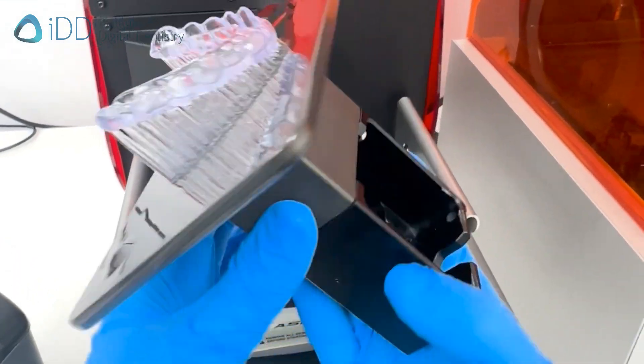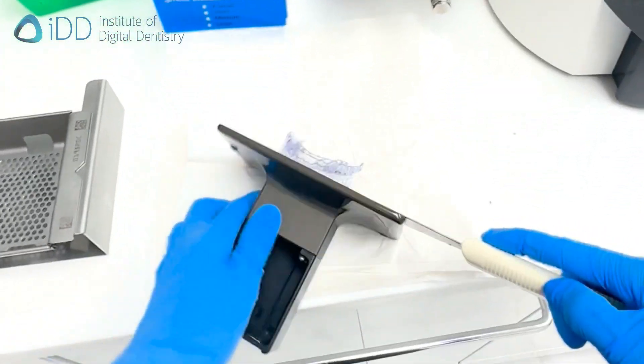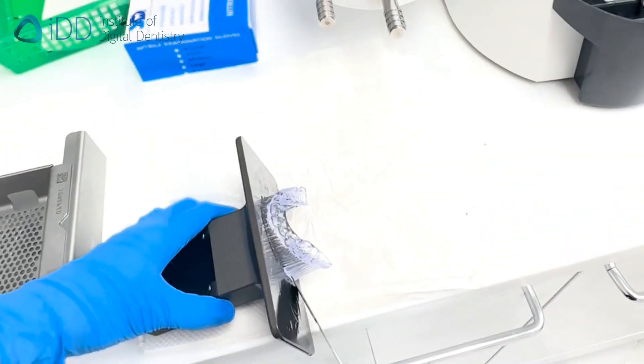After about three and a half hours of printing, it's time to remove the ByteSplint and start the post-processing. Using a spatula, very carefully remove the ByteSplint from the platform.